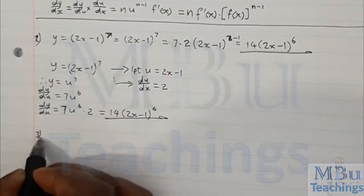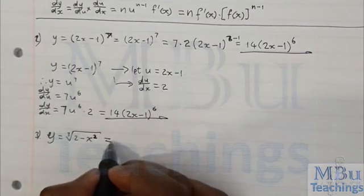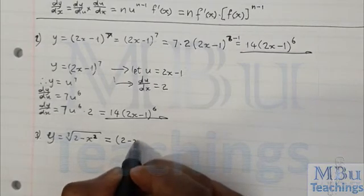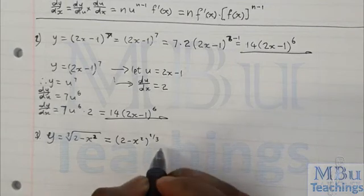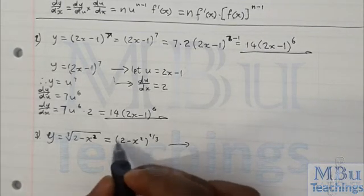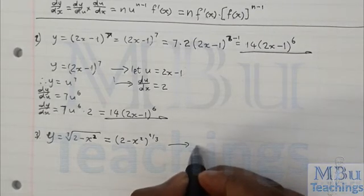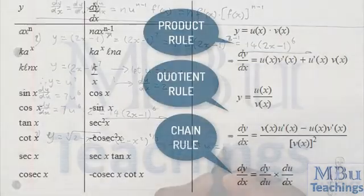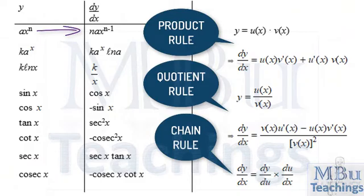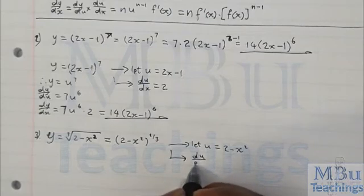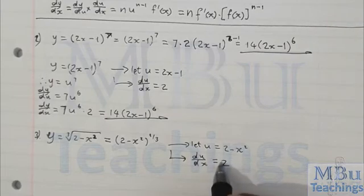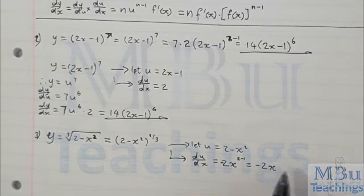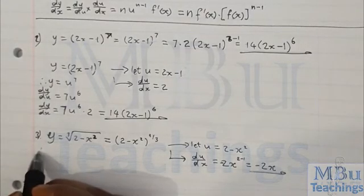Let's move to example number three. First things first — change into exponential form: (2 − x²) raised by 1/3. Then select your u: u equals what's inside the bracket, which is 2 − x². Therefore du/dx — the derivative of 2 − x² — will be negative 2x, since the derivative of x² is 2x. So du/dx equals negative 2x.